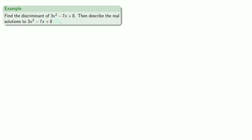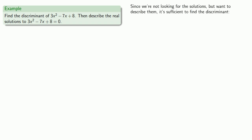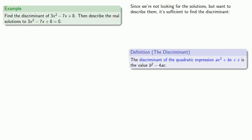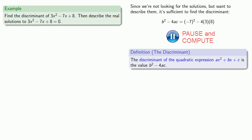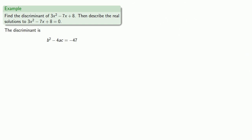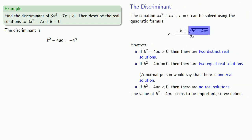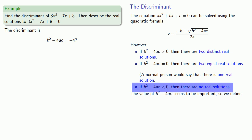Let's find the discriminant and say something about the real solutions to 3x squared minus 7x plus 8 equals 0. Since we're not actually looking for the solutions but want to describe them, it's sufficient to find the discriminant. Here a equals 3, b equals negative 7, c equals 8. Substituting into the discriminant formula and doing the arithmetic, we find the discriminant is negative 47. Since the discriminant is negative and we can't take the square root of a negative number, there are no real solutions.